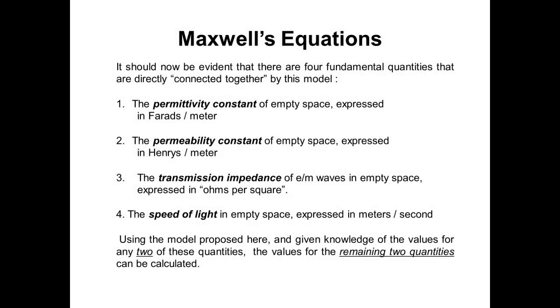It should now be evident that there are four fundamental quantities that are directly connected together by this model. One, the permittivity constant of empty space expressed in farads per meter. Two, the permeability constant of empty space expressed in henries per meter. Three, the transmission impedance of electromagnetic waves in empty space expressed in ohms per square. Four, the speed of light in empty space expressed in meters per second. Using the model proposed here, and given the knowledge of the values for any two of these quantities, the values for the remaining two quantities can be calculated.